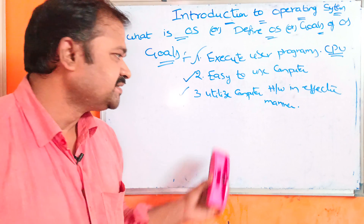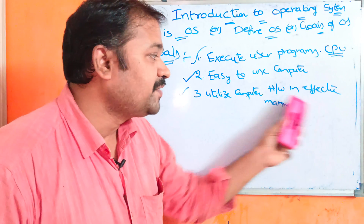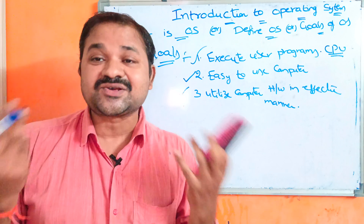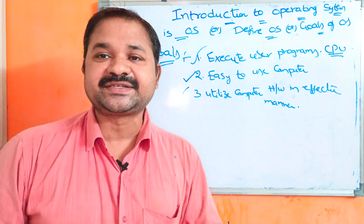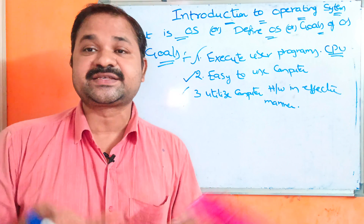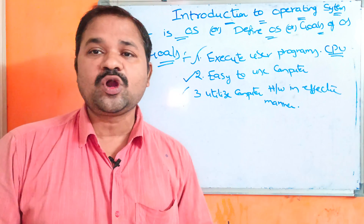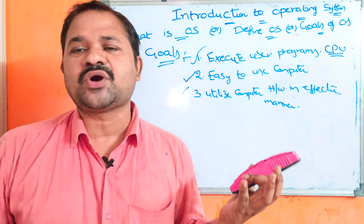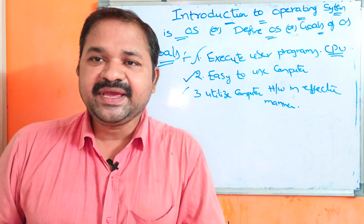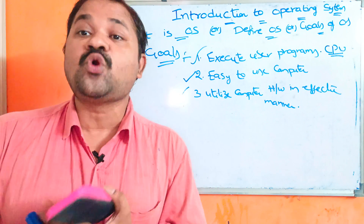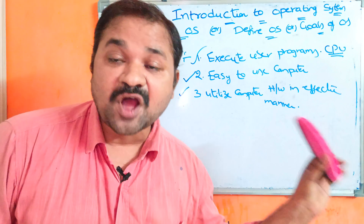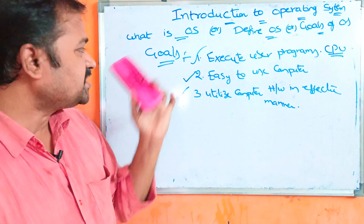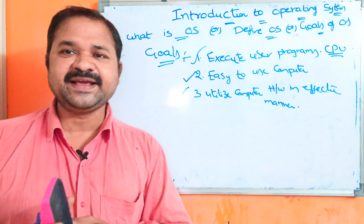Now let us see the third goal: utilize computer hardware in an effective manner. We have various hardware components such as I/O devices — keyboard, mouse, printer, scanner. All those hardware components will be utilized more effectively only with the operating system. These are the major goals of the operating system.